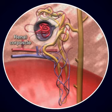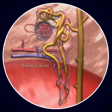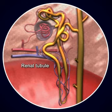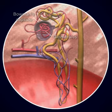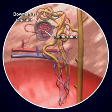The nephron is composed of two principal components: the renal corpuscle and the renal tubule. The renal corpuscle is made up of Bowman's capsule, which is a cup-shaped structure that surrounds a cluster of capillaries known as the glomerulus.